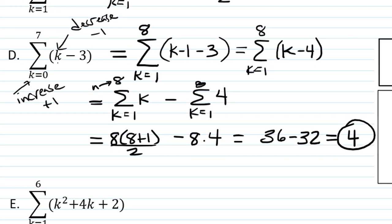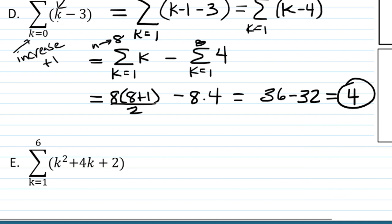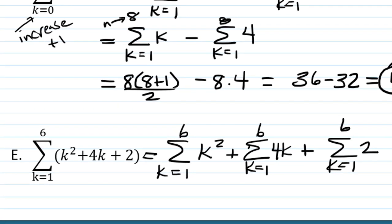And finally, we have part E, the sum k equals 1 to 6 of k squared plus 4k plus 2. So here we have three terms, but that's okay, we can still use the sum rule. No matter how many terms there are, we can break it apart into that many sums.